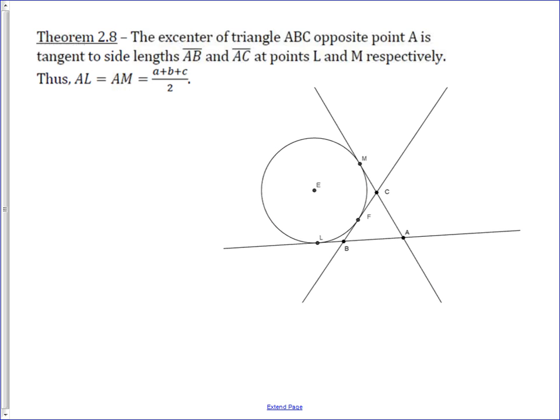Using equal tangents, we know that BL equals BF because L and F are the points of tangency of this excenter. Similarly, CF equals CM because they are also equal tangents.